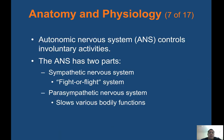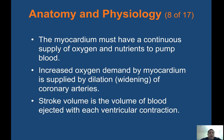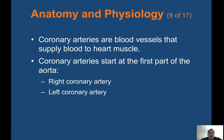The autonomic nervous system controls involuntary activities and has two parts: the sympathetic nervous system — fight or flight — and the parasympathetic nervous system, which slows various bodily functions. The myocardium must have a continuous supply of oxygen and nutrients. Increased oxygen demand is supplied by dilation of coronary arteries. Stroke volume is the volume of blood ejected with each ventricular contraction. Coronary arteries supply blood to the heart muscle, starting at the first part of the aorta — the right and left coronary artery.